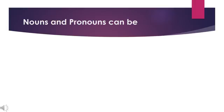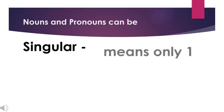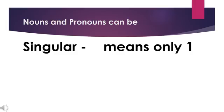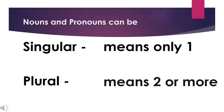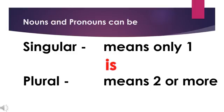Nouns and Pronouns can be singular, which means only one, or plural, which means two or more. If we use a singular noun or a singular pronoun in our sentence, we will use "is." But if we use plural nouns and plural pronouns, we will use "are."